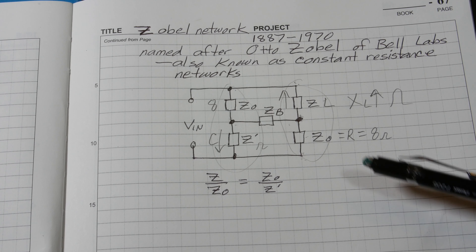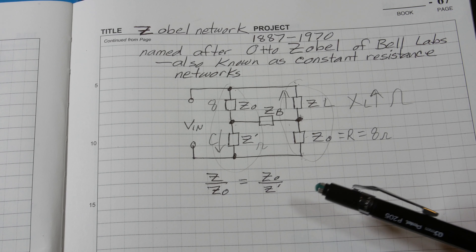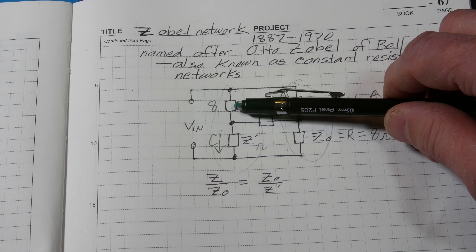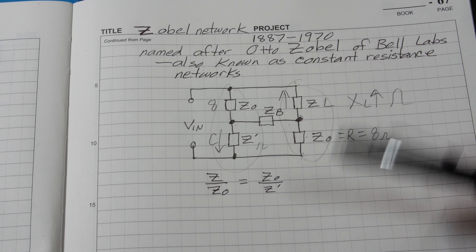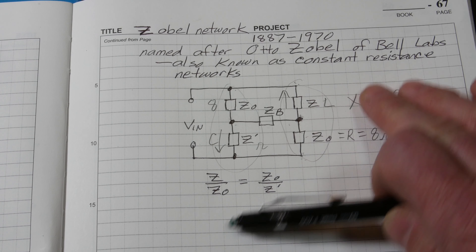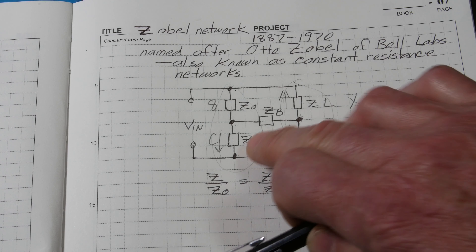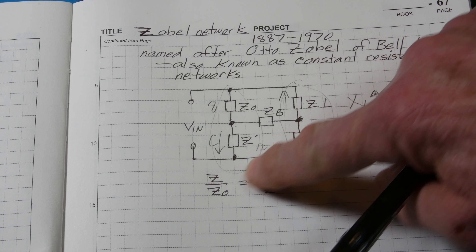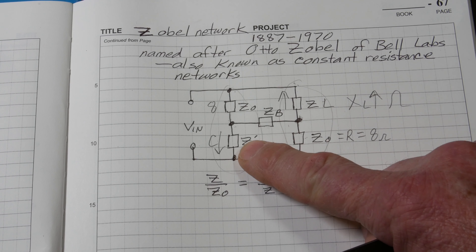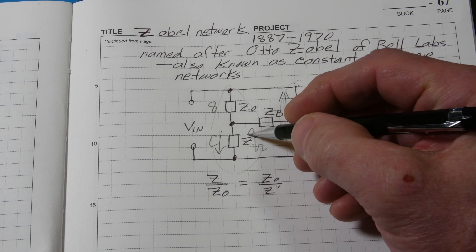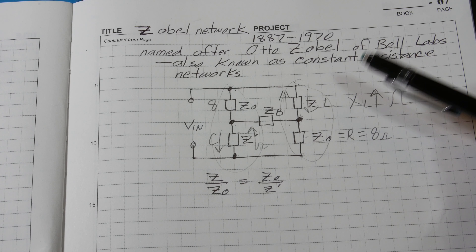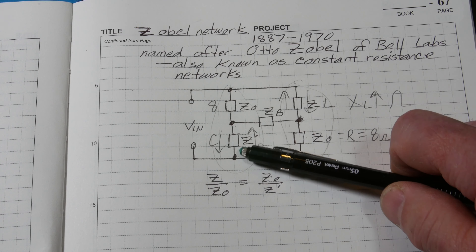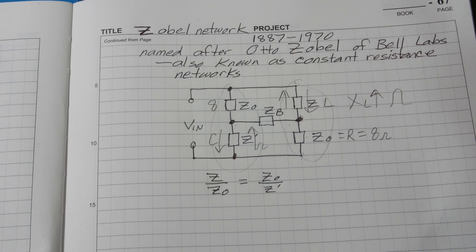There are some misnomers and a lot of confusion around the Zobel network. Some people think it was made to stabilize the amplifier's feedback network — that's not why it was designed. Although that may be a benefit, the real reason was to provide a steady impedance across a wide bandwidth so that the load is a lot easier to drive.